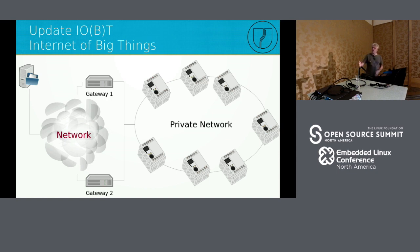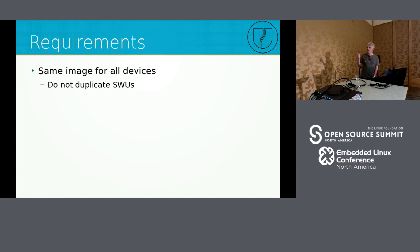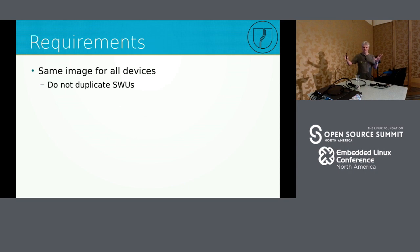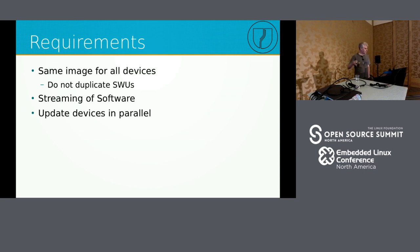When an update is coming, the operator wants to update this whole device in one shot. The customer had many requirements: the same images for all devices, with hardware detection to determine which services run. When the whole network is updated, the downloaded software should not be much larger than what's installed on a single device. The software must be streamed because the device controllers have no room for temporary storage, and all devices must be updated in parallel.